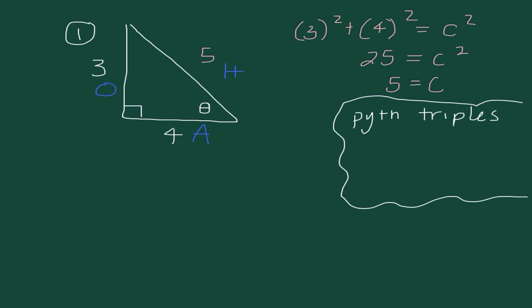I want to talk about a concept called Pythagorean triples. All Pythagorean triples are groups of numbers that correspond with right triangle side lengths. Probably the one we see most frequently is having legs of 3 and 4 with a hypotenuse of 5. The other one we see quite a bit is 5, 12, and 13. While you don't need to have these memorized, they can definitely be helpful in saving time when finding a missing side of a triangle.